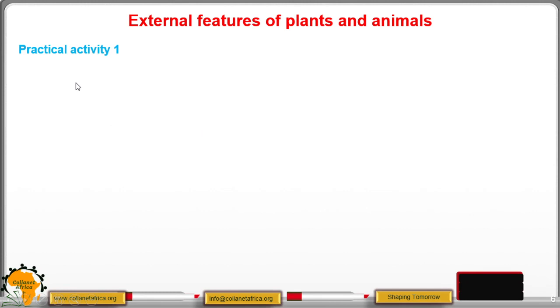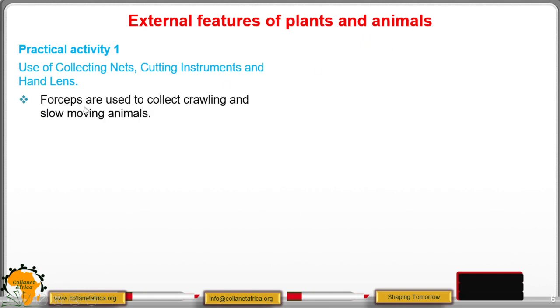So we want also to move ahead and look at practical activities. The first practical activity is the use of collecting nets, cutting instruments, and hand lens. So how are we going to use these instruments to study the external features of plants and animals? We have what we call the forceps which are used to collect crawling and slow moving organisms.